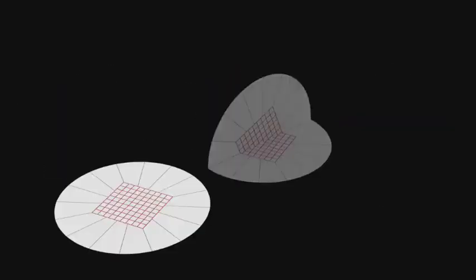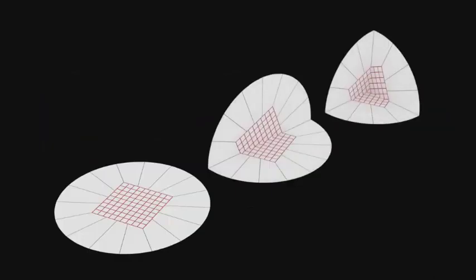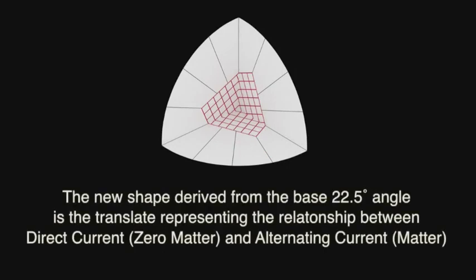The octave model, when folded, demonstrates the alteration of the area-time volume as it metamorphoses from the high charge density fifth dimension to the low charge density first dimensional base. The new shape derived from the base 22.5 degree angle is the translate representing the relationship between direct current, which is zero matter, and alternating current, which is matter.